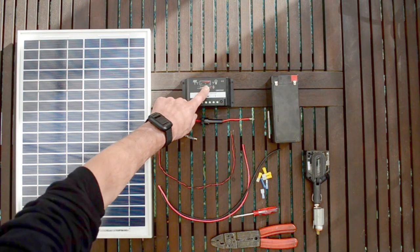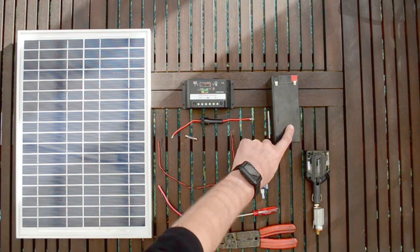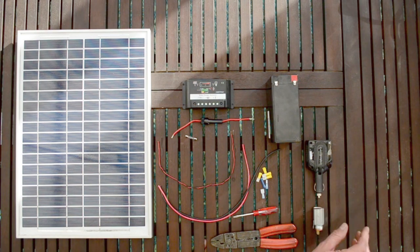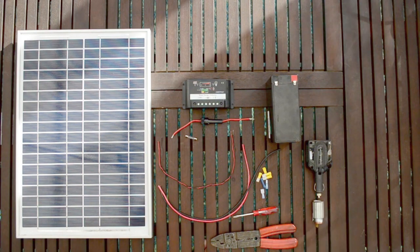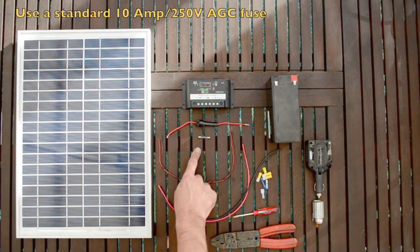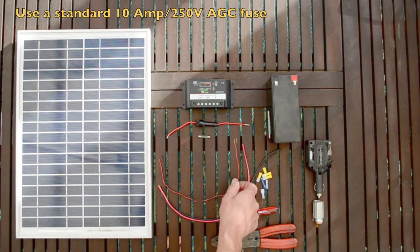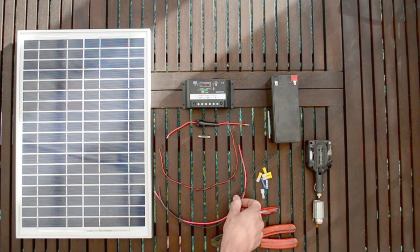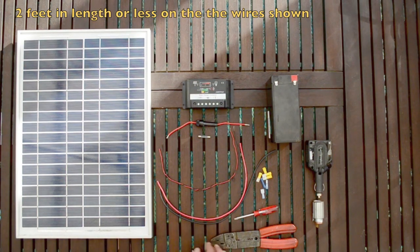You need a solar charge controller, a battery, some sort of inverter, a cigarette lighter adapter, an inline fuse holder with a fuse that's about 10 amps, about 24 gauge wire red and black if possible, and about 14 gauge wire red and black if possible, and some various crimps to hook things up.